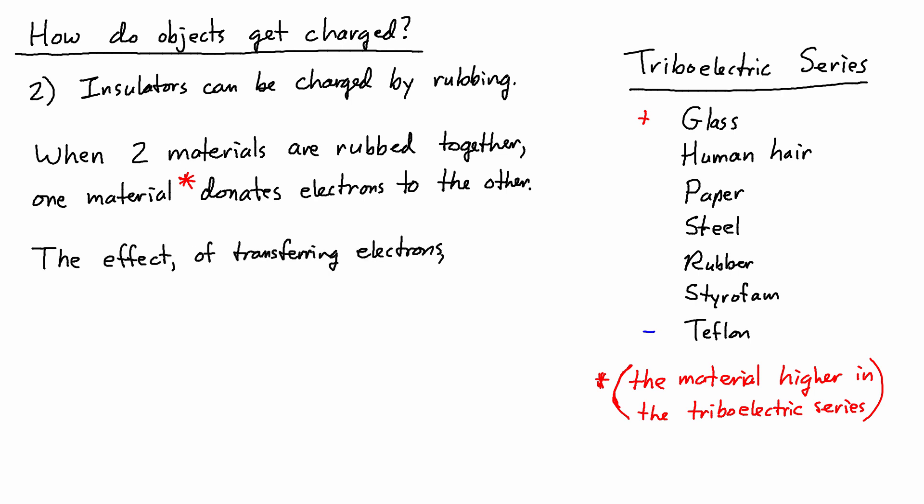Another aspect is that the distance between two materials in this series also has an effect. The effect of transferring electrons is stronger for materials that are farther apart in this series. If we were to choose human hair and Teflon instead of rubber and Teflon, the effect would be much stronger. The Teflon would still become more negative, but the human hair would become much more positive for the same amount of rubbing.